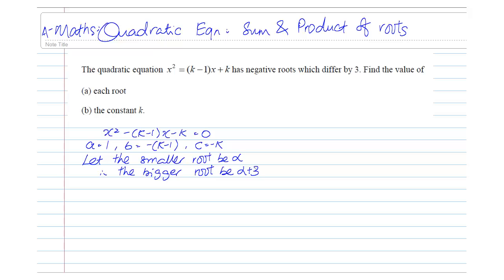So, we're going to keep it to this way. And we're going to first form our equation, which is sum of roots. So, alpha plus alpha plus 3 will be equals to negative B over A.